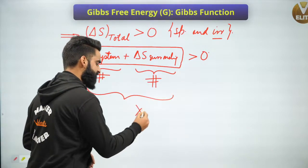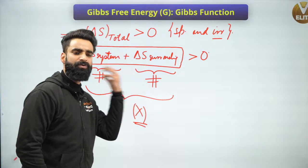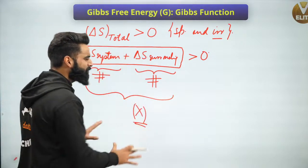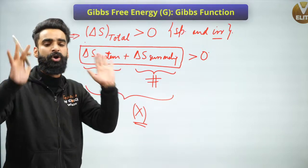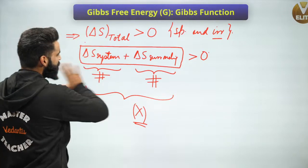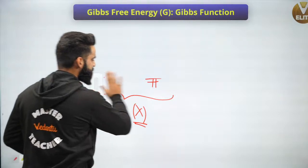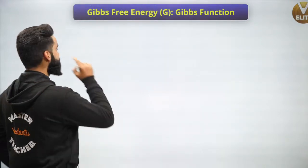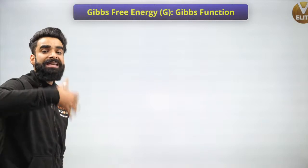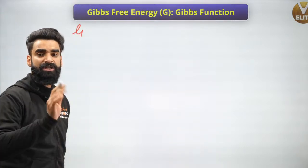To reduce this calculation, I'm going to introduce one more function — which is what we call Gibbs function or Gibbs free energy, represented by G. Just as I introduced the enthalpy function to simplify U plus PV by writing H, I'm now introducing G to represent H minus TS.